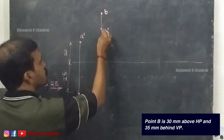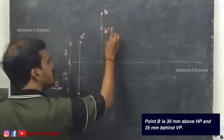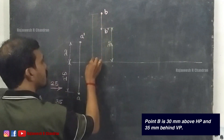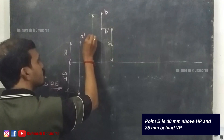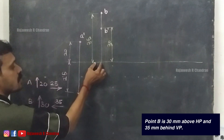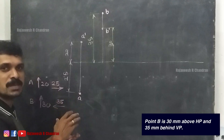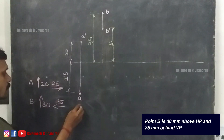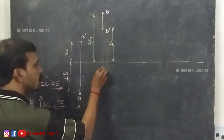Mark this dimension as 30 and this dimension as 35. Use at least 1cm for this distance so the appearance will be neat. This is point A and this is point B.